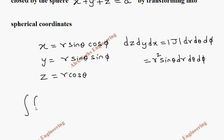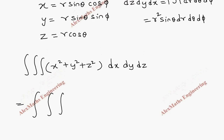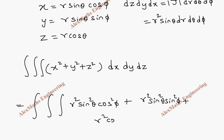The triple integral we have is x² + y² + z² times dx dy dz. We are going to substitute x², y², and z², which gives r² sin²θ cos²φ + r² sin²θ sin²φ + r² cos²θ, then multiplied by the volume element.